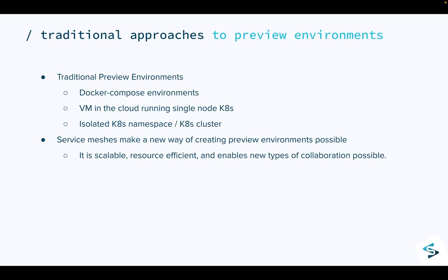Here I'm going to be talking about how you can use a service mesh — something like Istio or Linkerd — to create very resource efficient and highly scalable preview environments. As an added benefit, it also unlocks a new model of collaboration where it's possible to test things together across microservices, all before merging code. The feedback is available as you develop or as you create a pull request — it's at that phase.